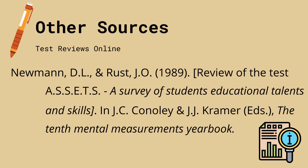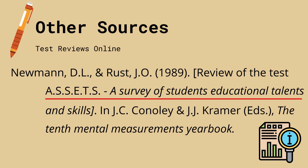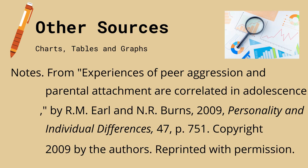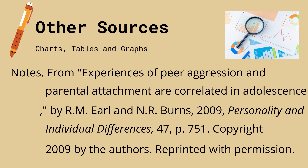There are also other sources you may need to include in your reference list. For test reviews online, enclose in brackets the title of the test review — for example, 'Review of the Test Assets, a Survey of Students' Educational Talents and Skills' — its editor's name, and the book where the review came from. You may also need to include charts, tables, and graphs in your reference list. Begin with the word 'Notes.' period, then the title of the article where you got the specific chart, table, or graph, by the name of the authors, the publishing year, the publishing journal, volume or issue number, and page number. Then write 'Copyright, [year] by the author. Reprinted with permission.' You have to get the permission of the authors before putting the data in a chart, table, or graph in your own paper.